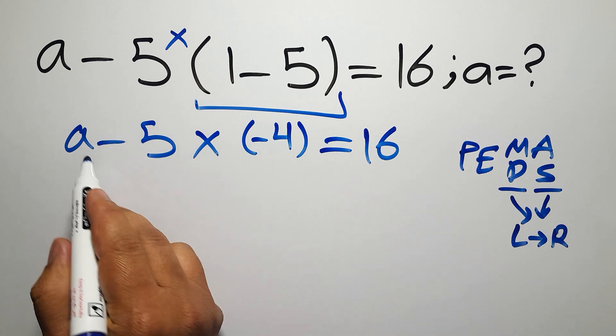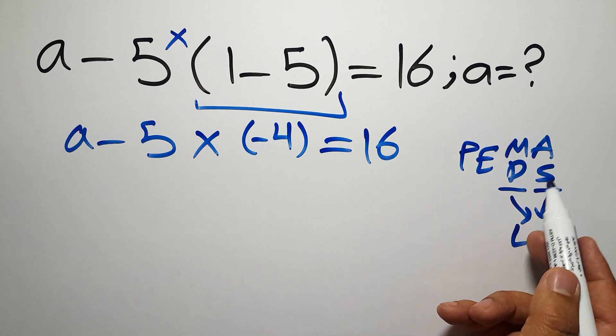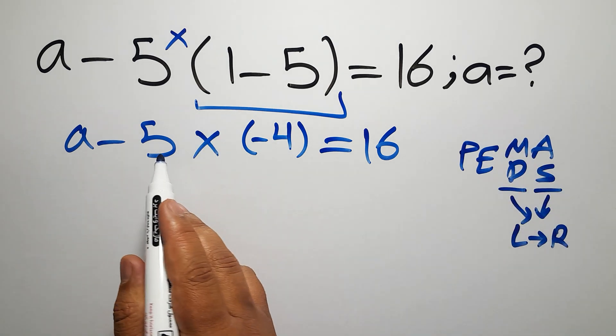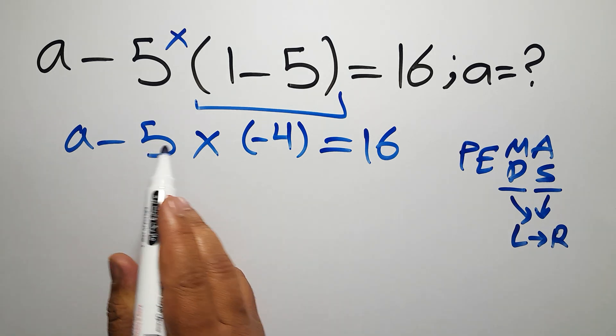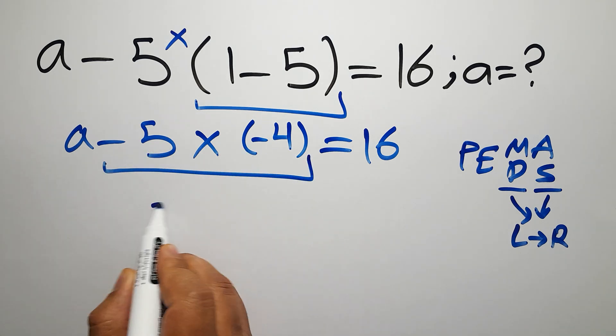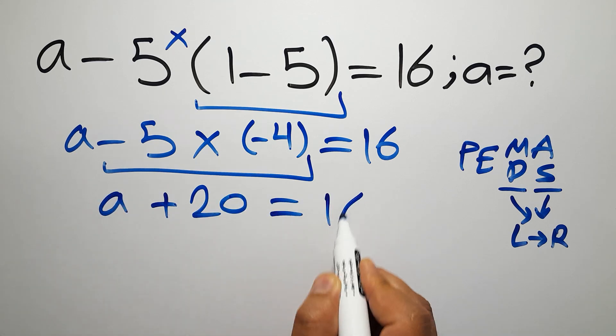Now, we have one subtraction and one multiplication. In PEMDAS, multiplication comes before subtraction. So now, we have to do this multiplication. Negative 5 times negative 4 gives us positive 20. So A plus 20 equals 16.